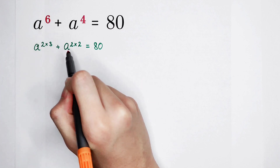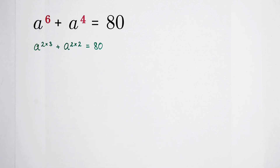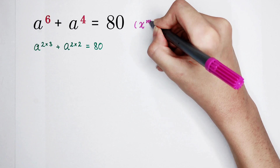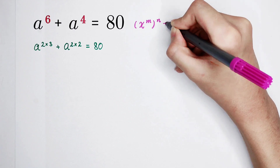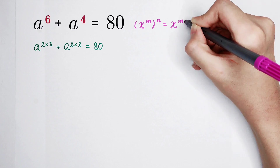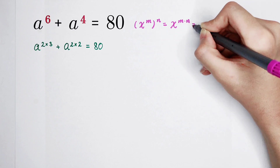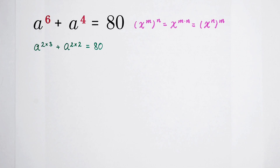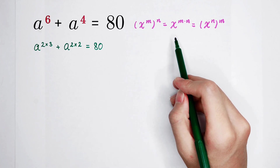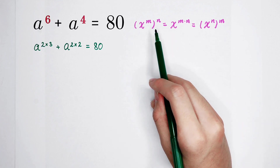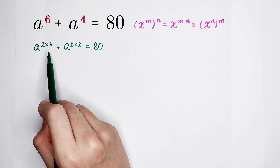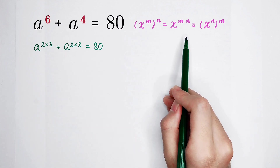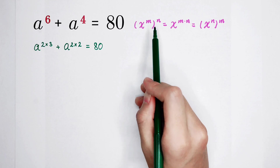Now we have to use this formula: x to the power of m, all to the power of n, is equal to x to the power of m times n. We apply this — h to the power of 2 times 3 becomes h squared, all to the power of 3. Here h is x, 2 is m, and 3 is n.